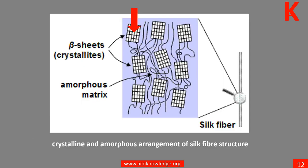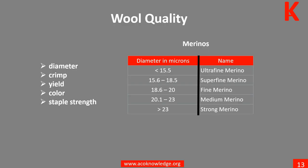Silk is a protein fiber and consists of amino acids. The physical characteristics of the fiber are determined by the structure of the macromolecule composing the fiber. Learn more in Unit 2.